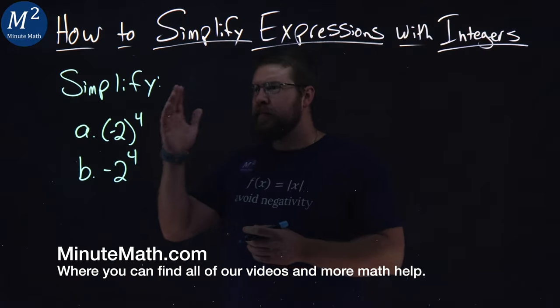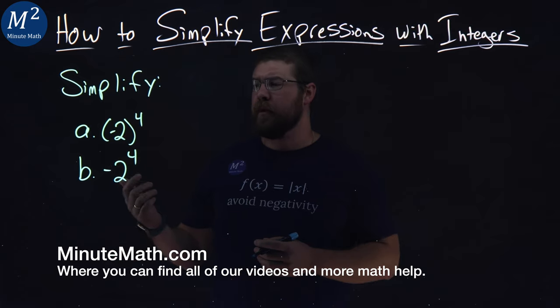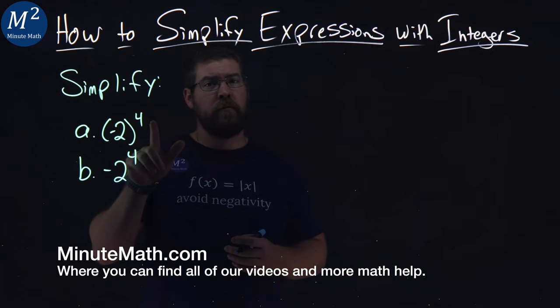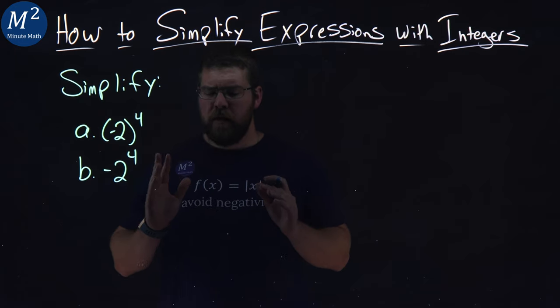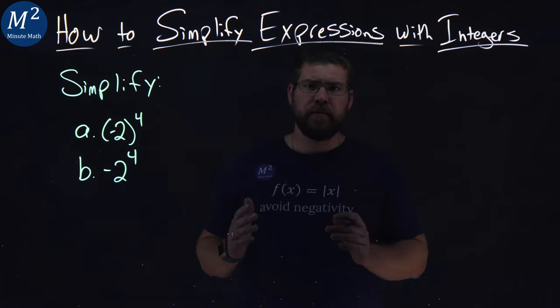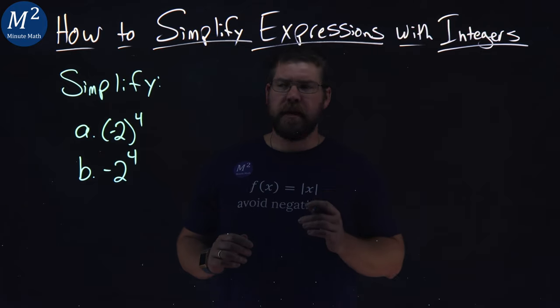We're given these two problems here we need to simplify: negative two in parentheses to the fourth power, and negative two to the fourth power. These have different solutions, and we're going to see why in a second.